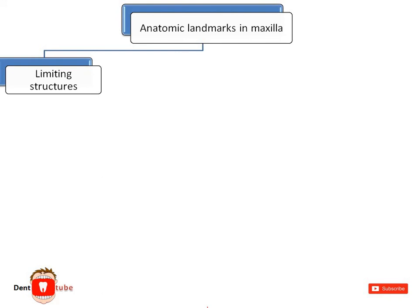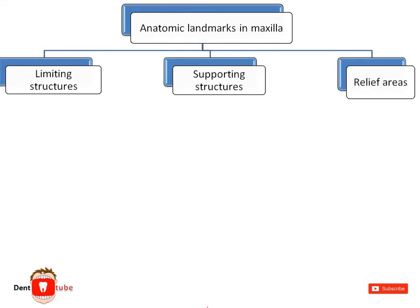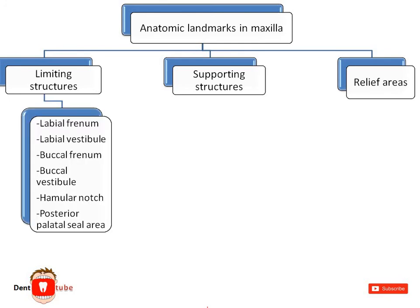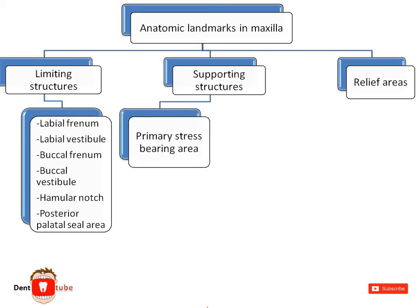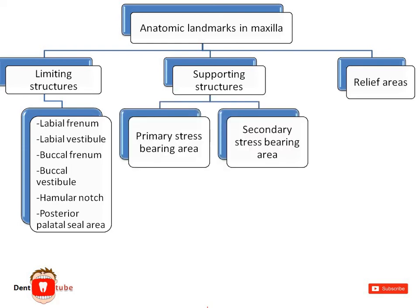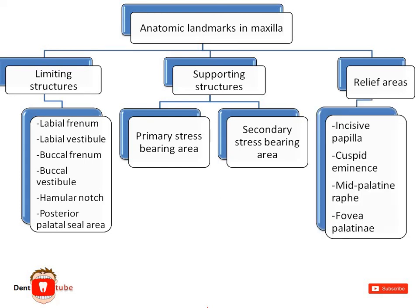The anatomical landmarks in the maxilla are basically divided into limiting structures, supporting structures, and relief areas. Under limiting structures we have: labial frenum, labial vestibule, buccal frenum, buccal vestibule, hamular notch, and posterior palatal seal area. Under supporting structures we have primary stress-bearing area and secondary stress-bearing area. Under relief areas we have: incisive papilla, canine eminence, mid-palatine raphe, and fovea palatinae.